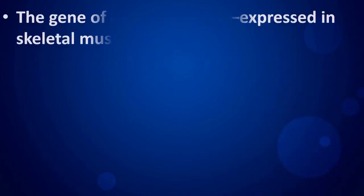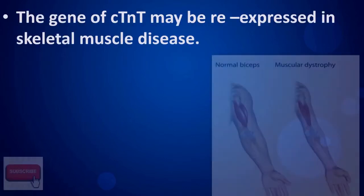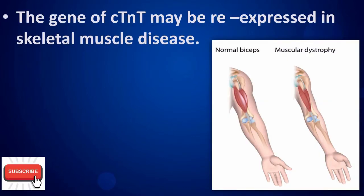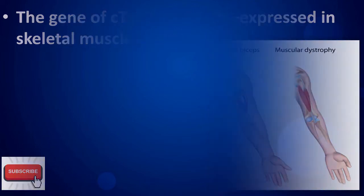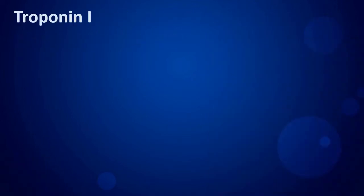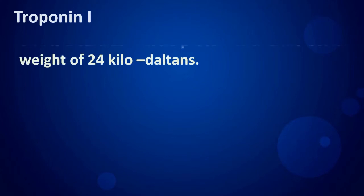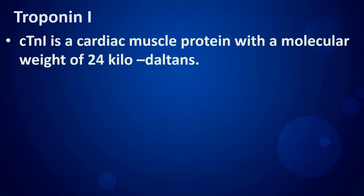The gene of cardiac Troponin T may be re-expressed in skeletal muscle disease. Troponin I is a cardiac muscle protein with a molecular weight of 24 kilodaltons.